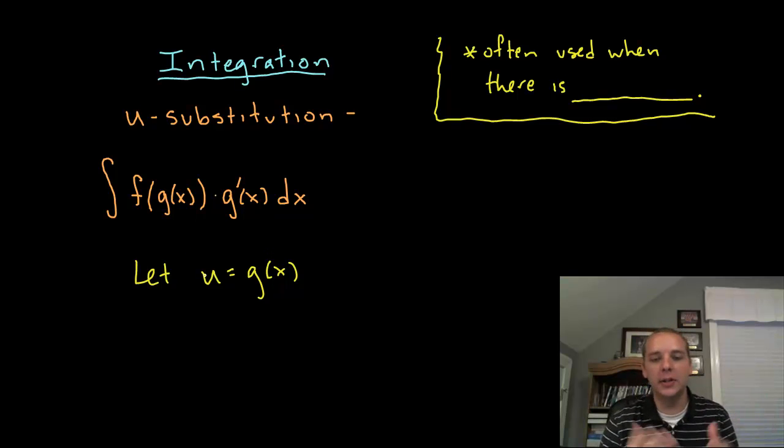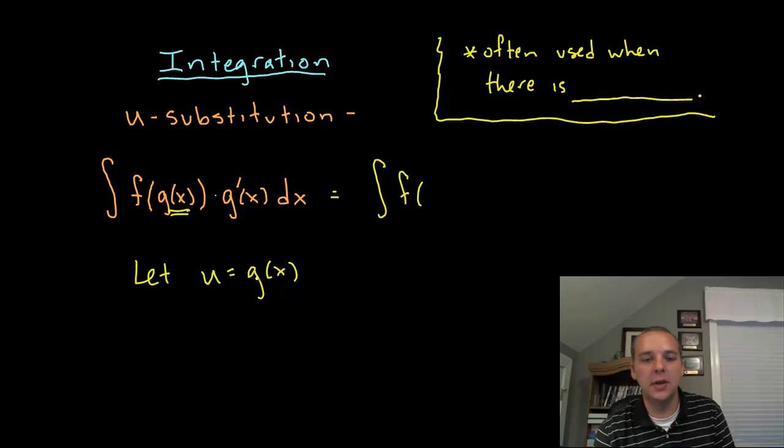If we let u stand for g of x, then this expression turns out to be a lot simpler. So if we start writing it, we'd have the integral of f, not of g of x anymore, but since g of x and u are the same thing, I can just say f of u. And that looks a lot easier.